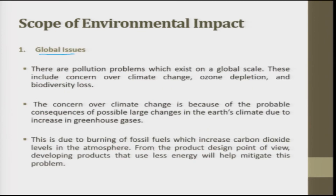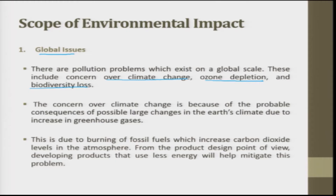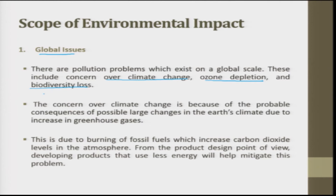There are pollution problems that exist on a global scale. These include concern over climatic change, ozone depletion, and biodiversity loss. For climate change: the ice over the north pole is melting, water levels increase, creating the possibility of floods or storms due to imbalance in water levels — a chain of temperature increase, melting ice, and flooding. For ozone depletion: rockets pierce the atmosphere creating ozone holes, leading to health problems. We also disperse waste and nuclear materials into the sea, causing biodiversity loss.